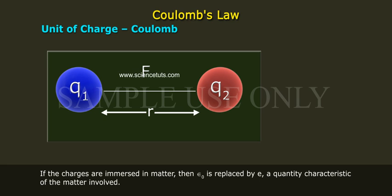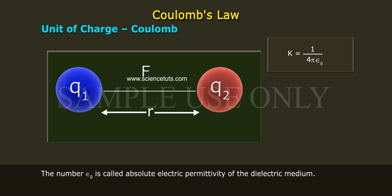If the charges are immersed in matter, then epsilon naught is replaced by epsilon a, a quantity characteristic of the matter involved. Then K is equal to 1 by 4π epsilon a. The number epsilon a is called absolute electric permittivity of the dielectric medium.